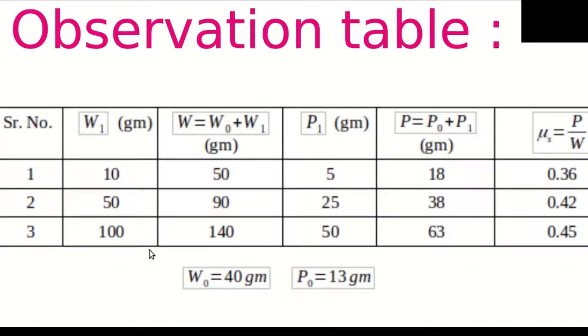As Mahajan sir has taken readings, we have calculated further and all the observations we have written here. These three observations were for W₁: 10, 50, and 100 respectively. And then, for P₁, it was 5, 25, and 50.